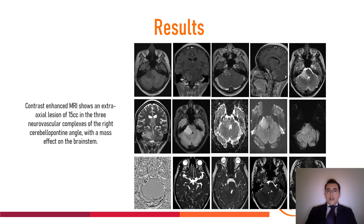Contrast-enhanced MRI shows an extra-axial lesion of 15 cc in the neurovascular complex of the right cerebellopontine angle with mass effect on the brainstem. MRI before the second surgery shows an expansive lesion with extra-axial appearance involving the neurovascular complex of the right cerebellopontine angle, with displacement of the cerebellar peduncle, brainstem, and ipsilateral ventricle. The lesion is hyperintense on T1 with heterogeneous contrast enhancement, hyperintense on T2 and FLAIR without restriction to diffusion, and without calcification or bleeding.